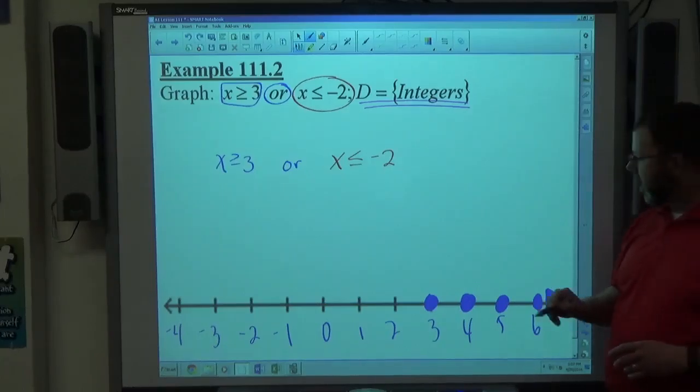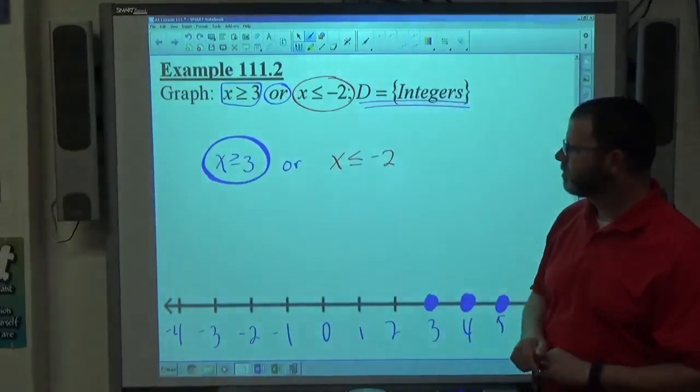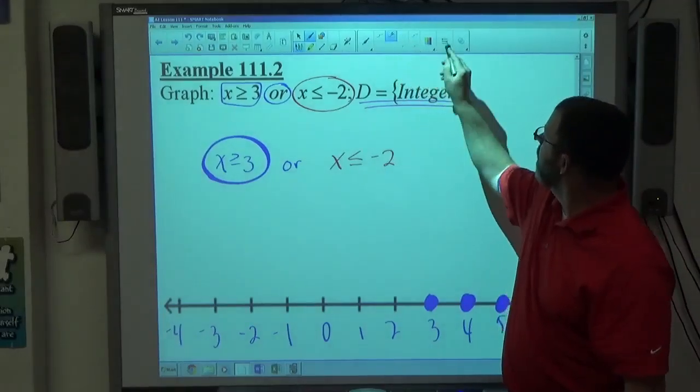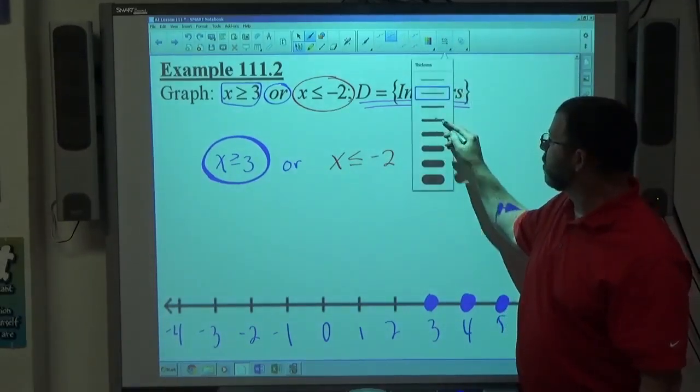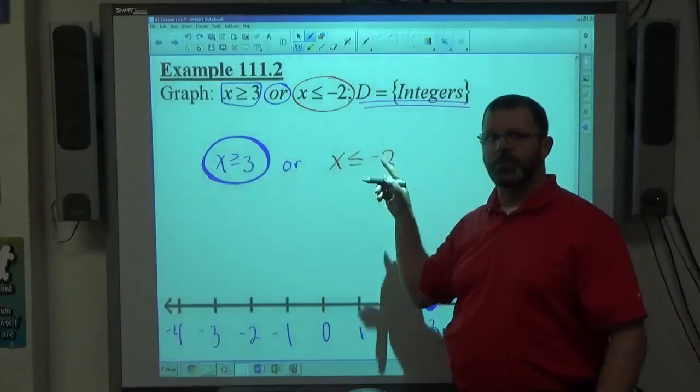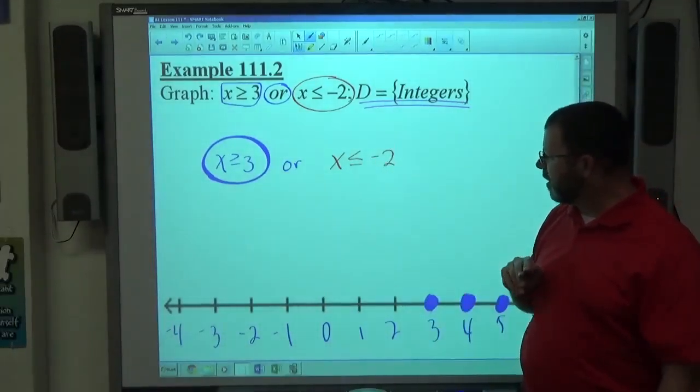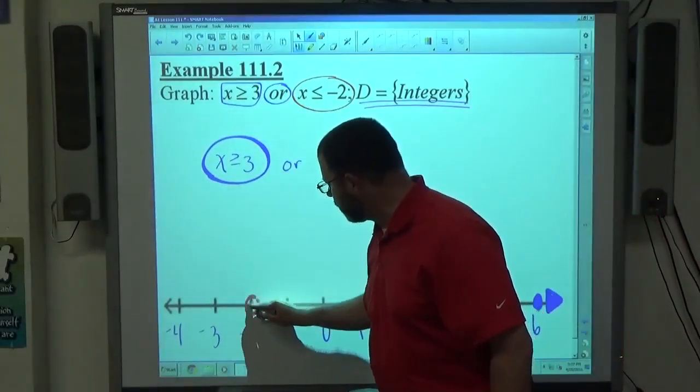Okay, once again, when I'm graphing this, I'm looking at the domain as integers. So I'm only graphing integers. x is greater than or equal to 3 means I start at 3 and go to the right forever. And negative 2 means start at negative 2, go to the left forever. I'm going to make sure these numbers both show up on here.